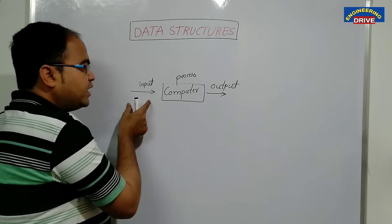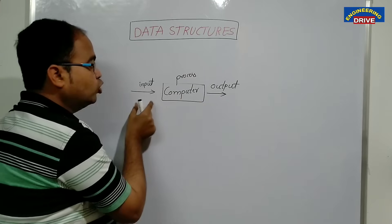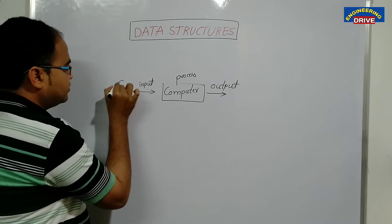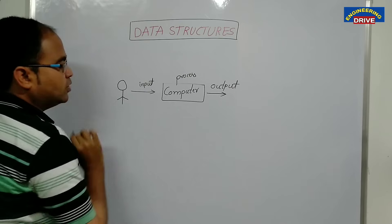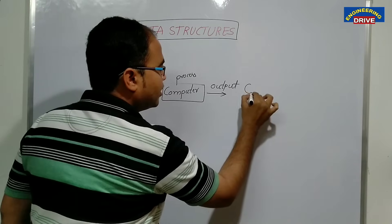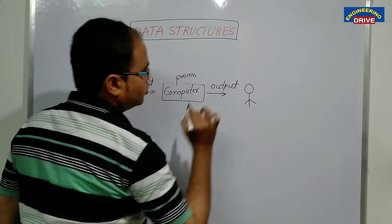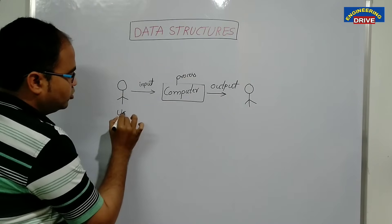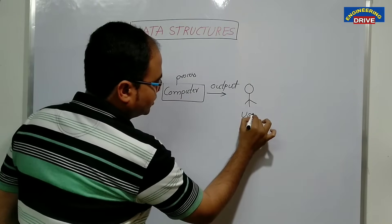Who will provide the input to the computer? Users will provide the input. And who will see the output? User will see the output. So user is on both sides — providing input and receiving output.